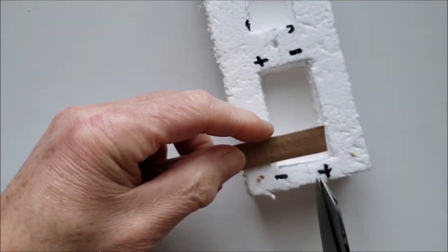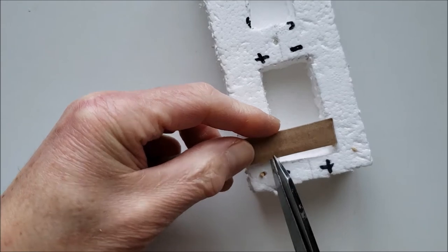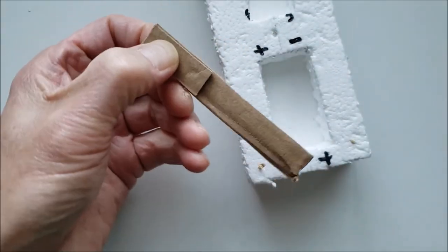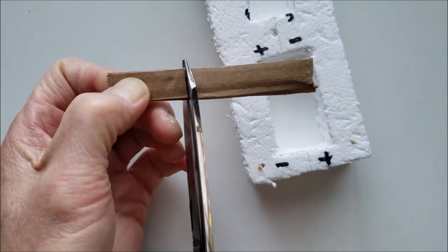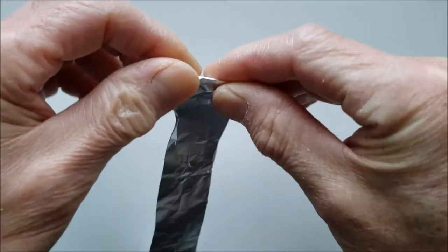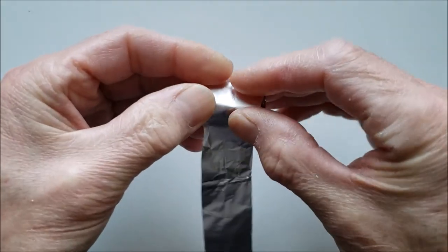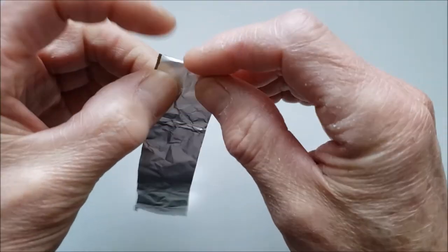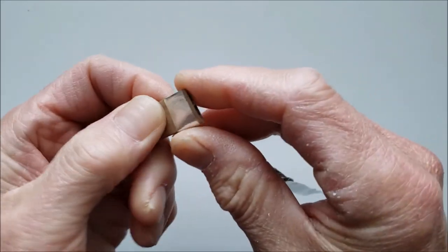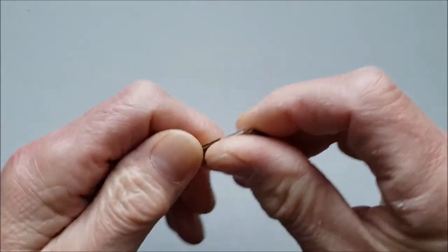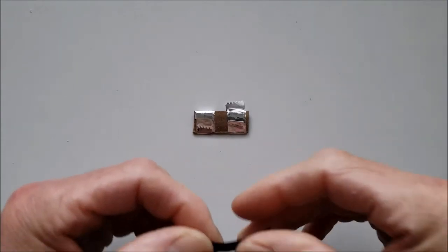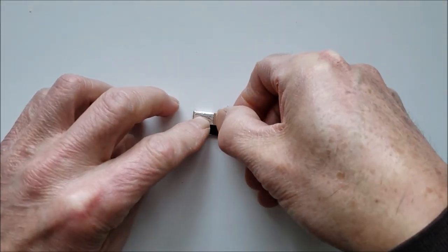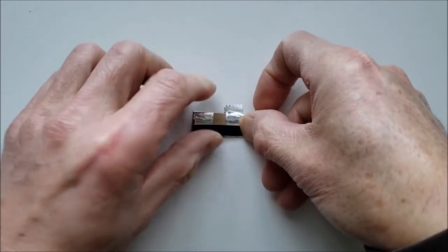To make the contacts for the batteries, cut two pieces of cardboard slightly longer than the width of the cavity for the batteries. Wrap a full width strip of aluminum foil around one of the cardboard pieces. Wrap two strips of aluminum foil around the second cardboard piece, making sure they don't touch each other. Tape the aluminum strips to the cardboard to make sure they don't fall off.